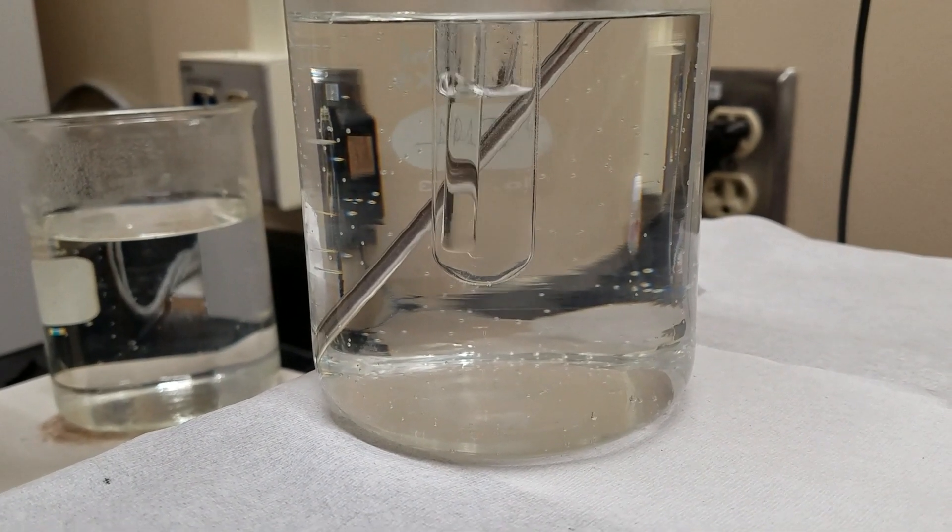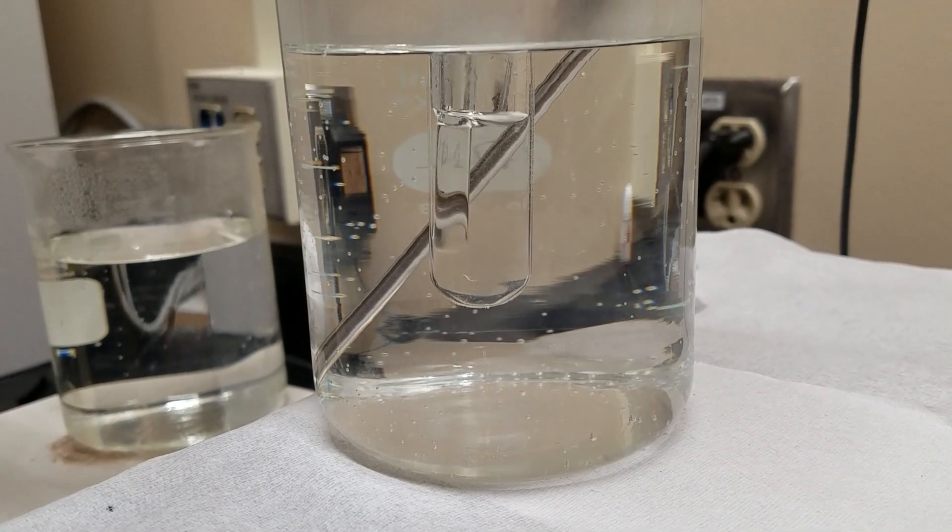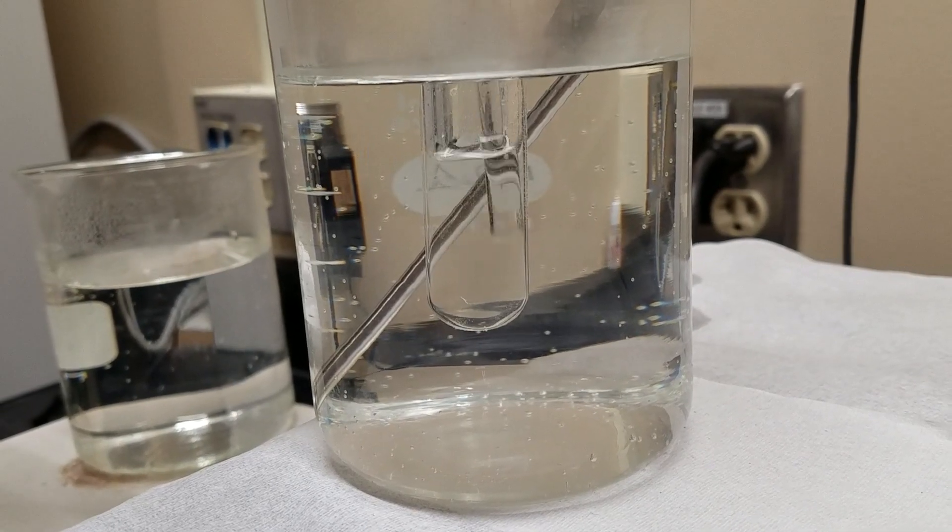When the solution gets cool enough the potassium nitrate will reach supersaturation and it will start to precipitate. You'll need to watch closely because it happens awfully fast.